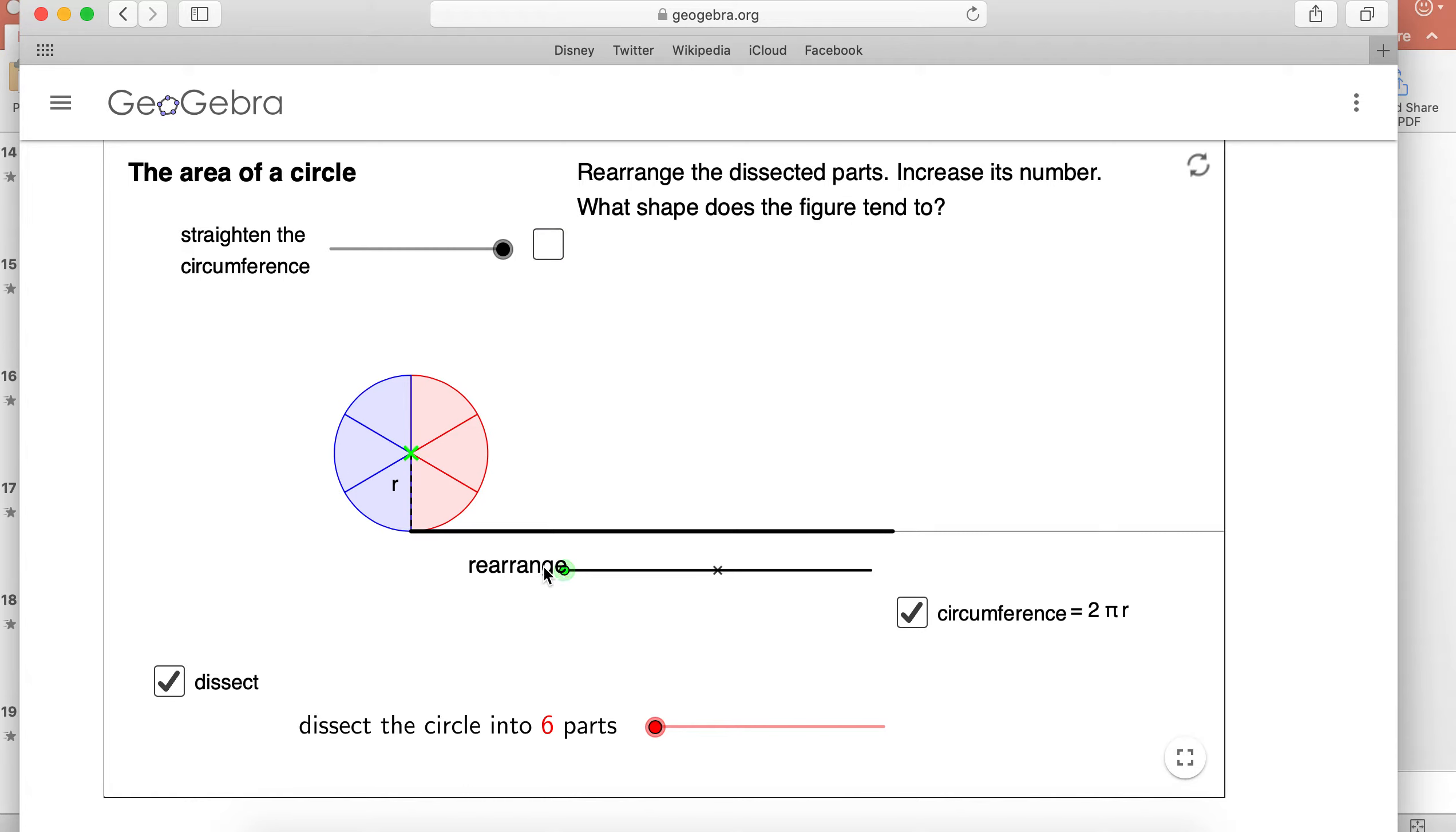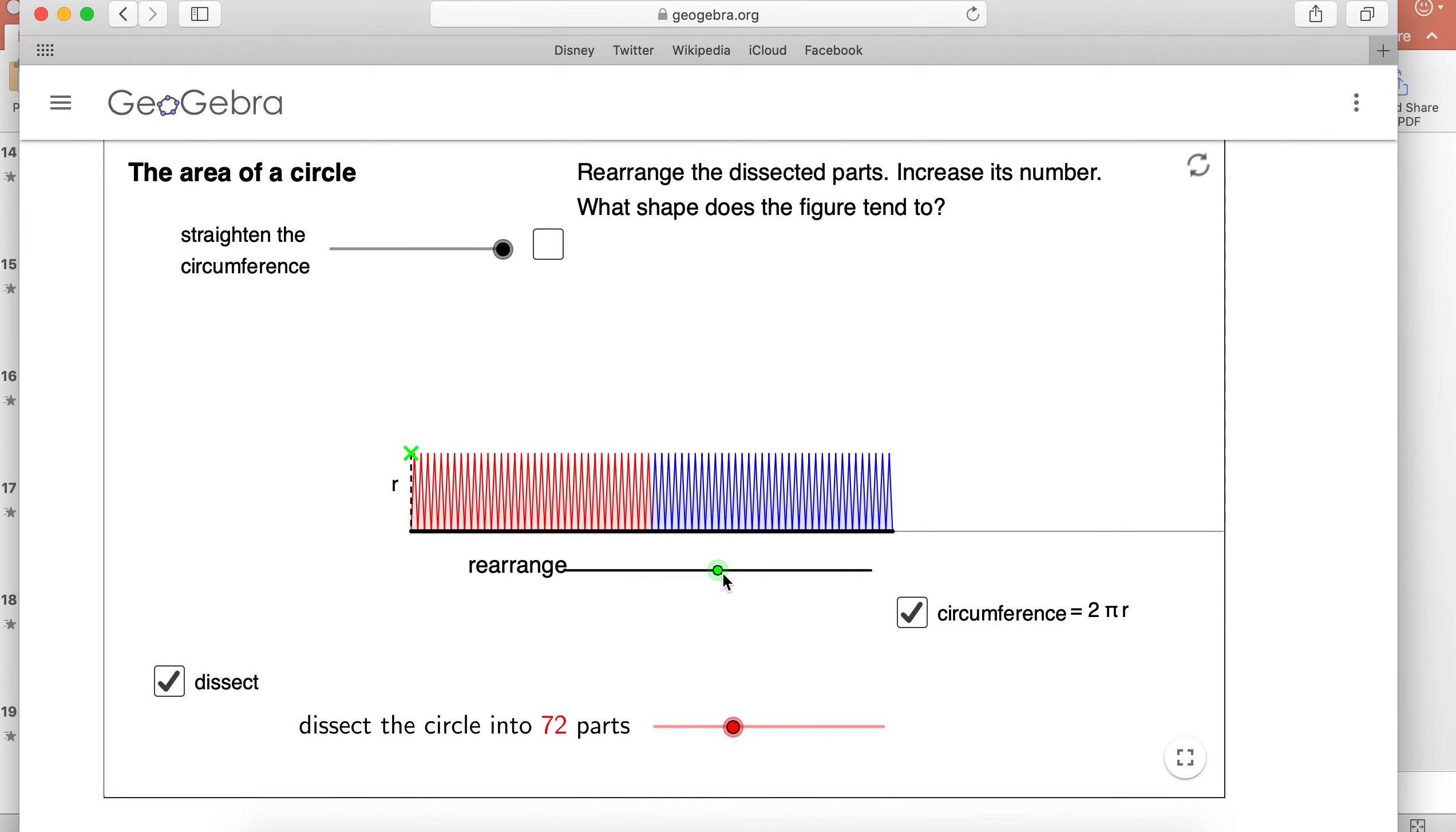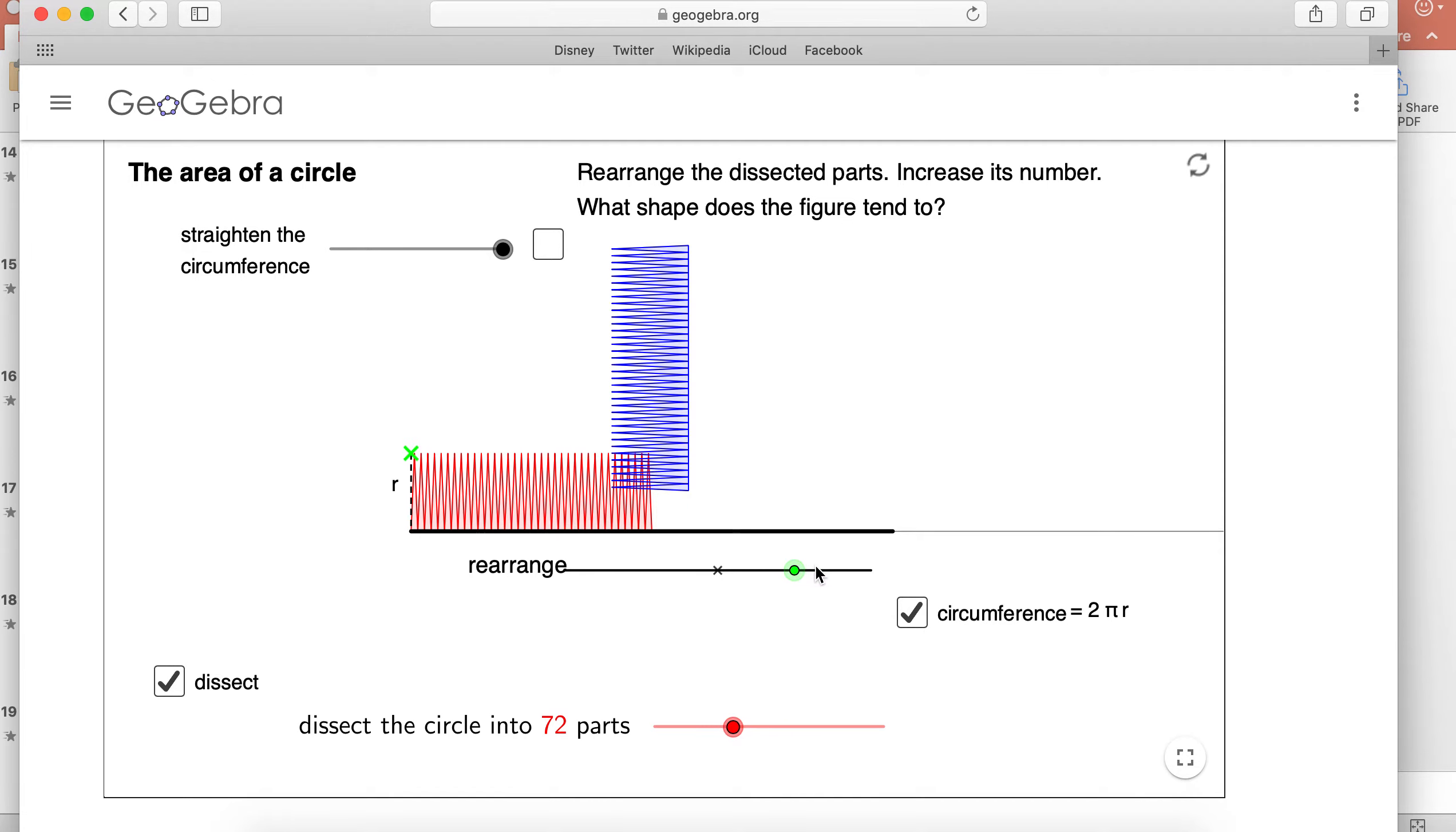But what happens as we do more pieces? Let's say we go to 72 pieces. Now when we rearrange, it looks like two combs being put together. Now we can see that it's more rectangular. There are still slight curves, but the more pieces that you have, it ends up approximating a rectangle.